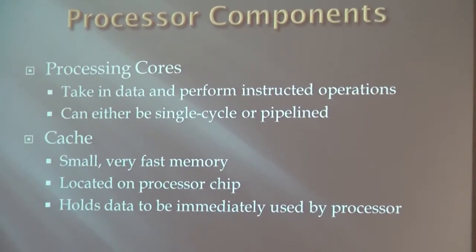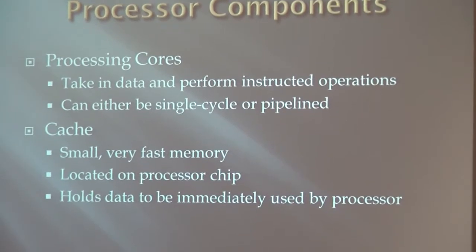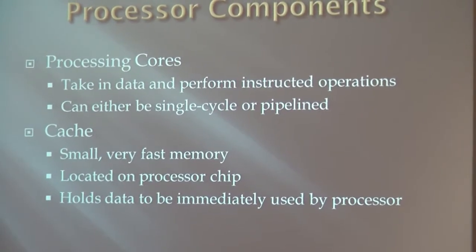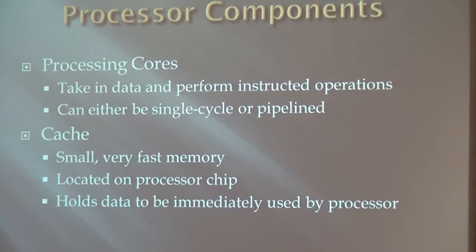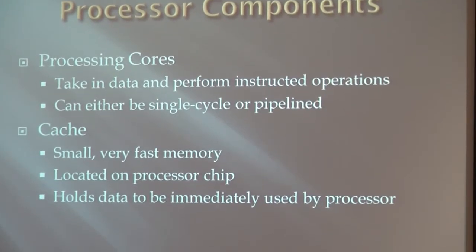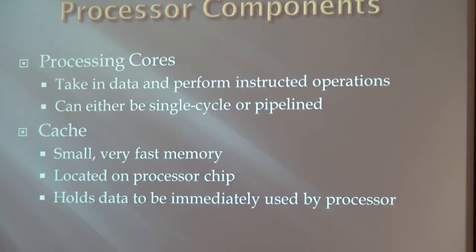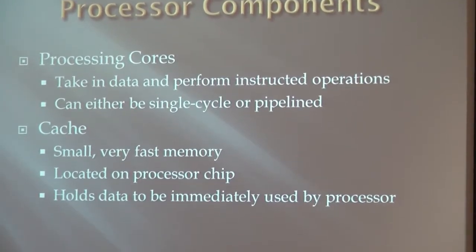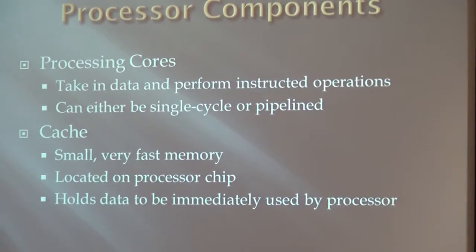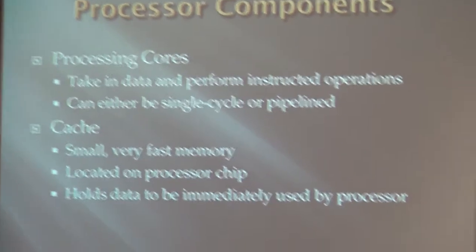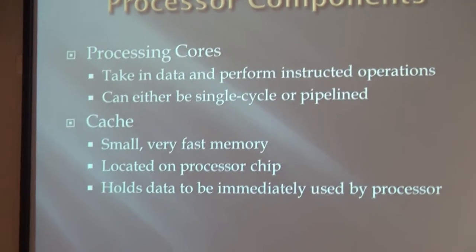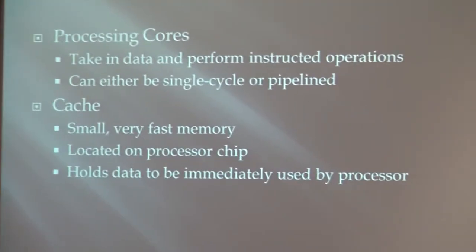And then the cache — small, extremely fast memory located right on the processor chip. Think RAM on steroids. It holds data to be immediately used by the processor, but it doesn't hold very much, because if you have too much cache, the time it takes to read it takes away from the speedup gained by having a cache.